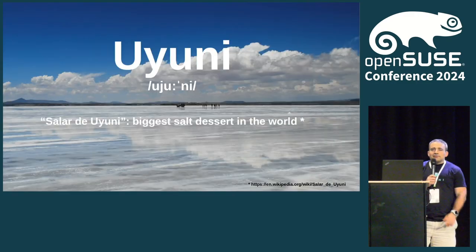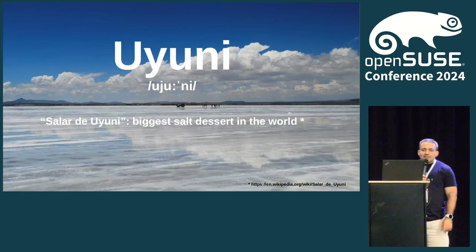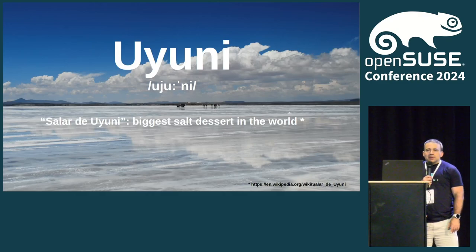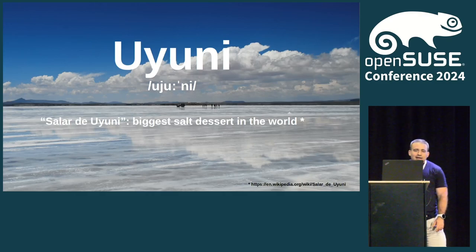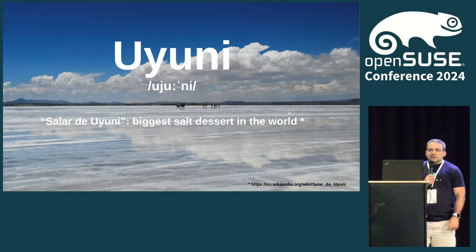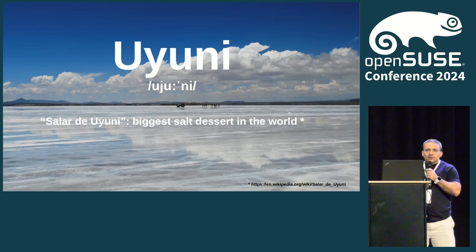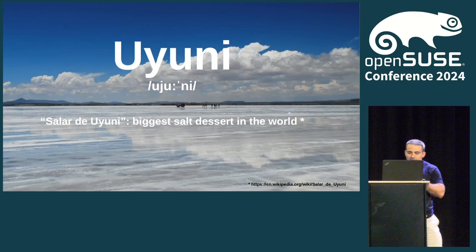Where does Uyuni come from? Maybe you have already seen this slide, but Uyuni is actually a place. It's a place in Bolivia and it's the biggest salt desert in the world. You will see why the salt thing matters later on.